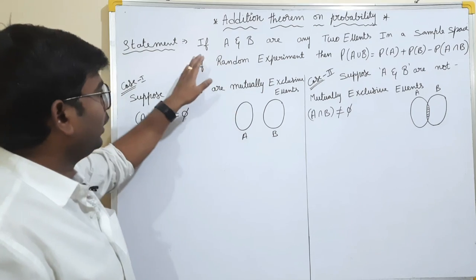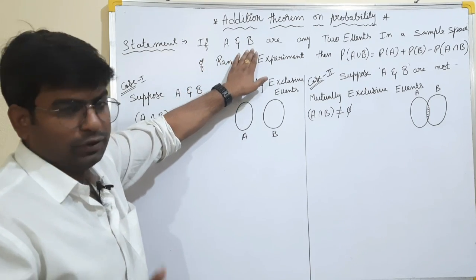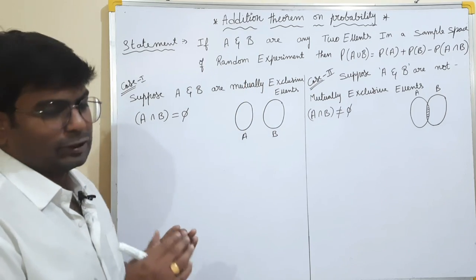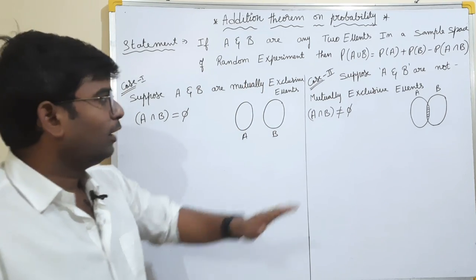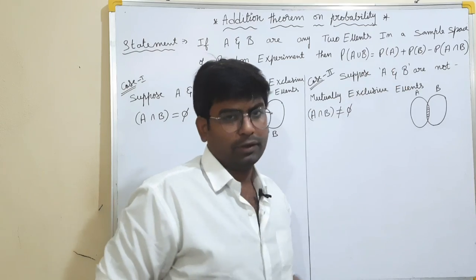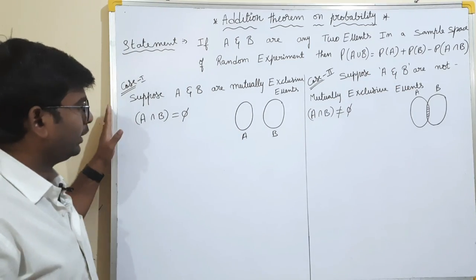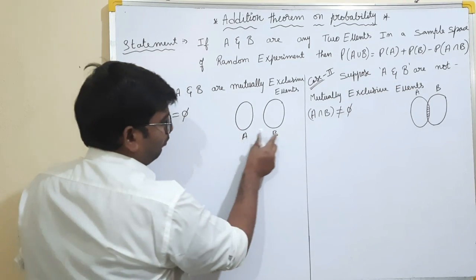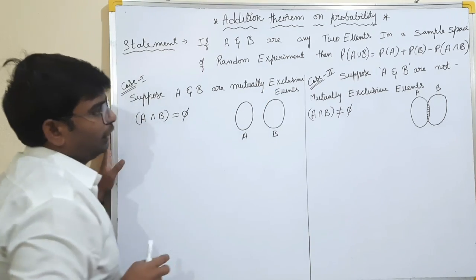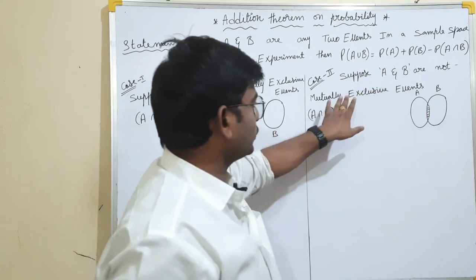What is the meaning? A and B are two events in a sample space and we will perform a random experiment in a sample space. So we need to prove this formula. We will prove two cases. Case 1 is A and B are mutually exclusive events. Case 2 is A and B are not mutually exclusive events.